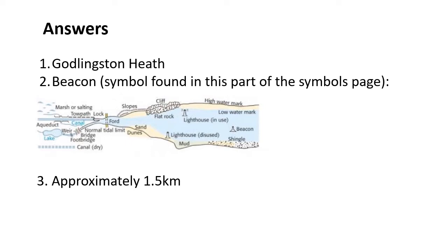OK, answers. Number one: Godlingston Heath. Number two: a beacon. Hopefully you identified the water features there using the key — it is a beacon, not a very commonly seen thing, usually found out in the water and more for sailing. And number three: approximately 1.5 kilometres. I say approximately because it's not perfectly accurate measuring in this way, but you can be relatively accurate.